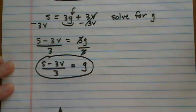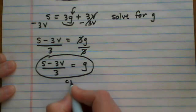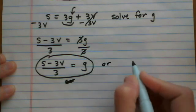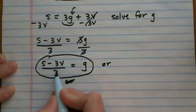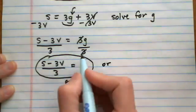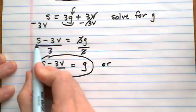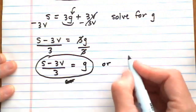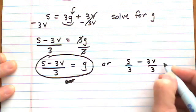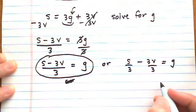We could also write this in a different format, and either answer is okay. If I give the 3 denominator to each term separately, or in other words divide each term by 3 separately, I would have s over 3 minus 3v over 3 equals g.